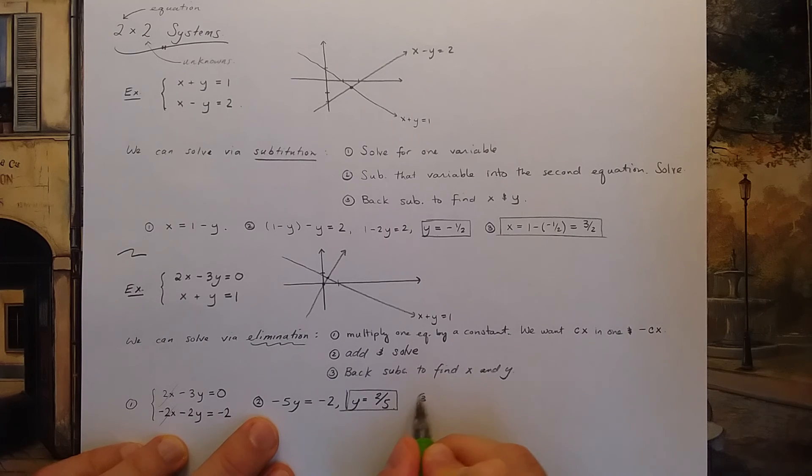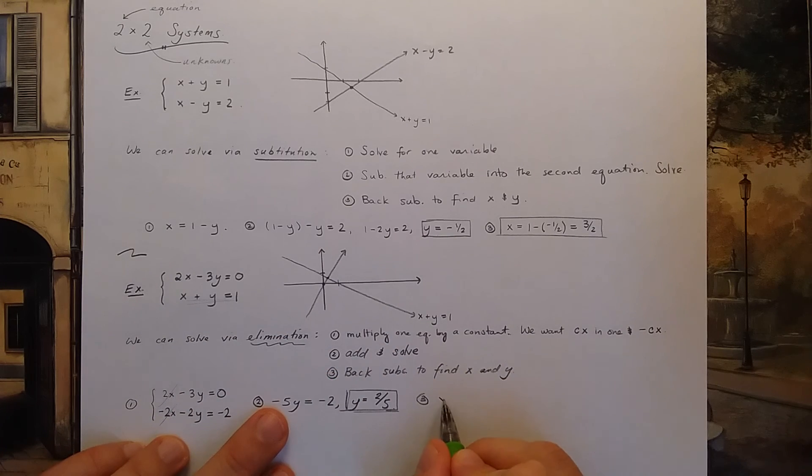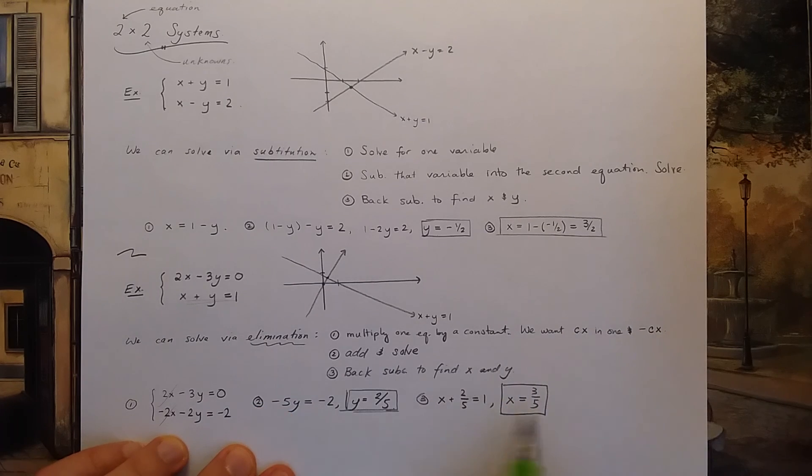And step three is back substitute. Now that I know y, I could back substitute into either one of these two equations. I'll pick the second one here because it seems a little bit easier. So I'm going to back substitute into the second equation to get x plus 2 fifths equals 1. And I believe you can solve that and x is 1 minus 2 fifths or 3 fifths. So now I have both x and y.